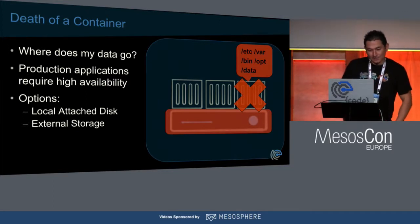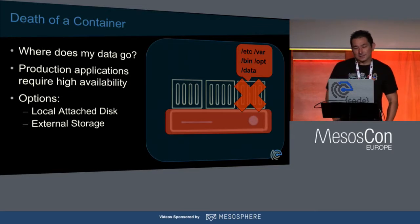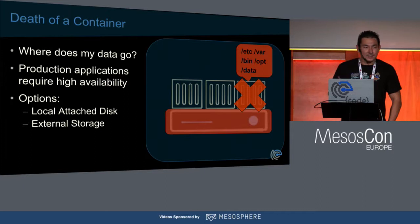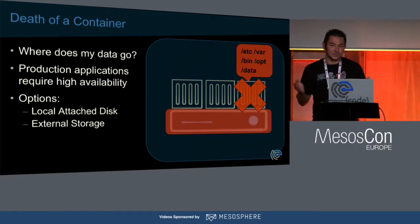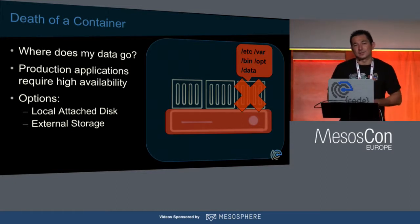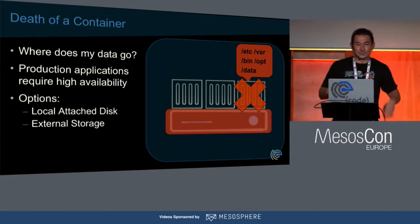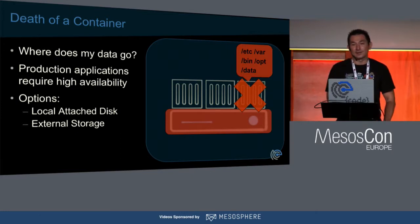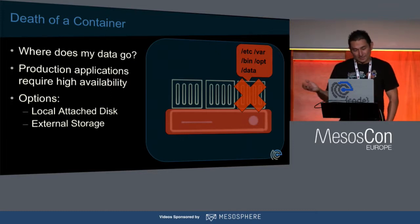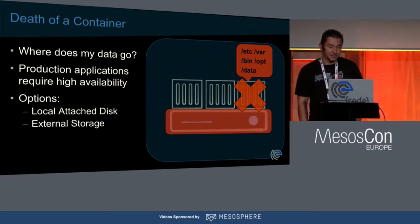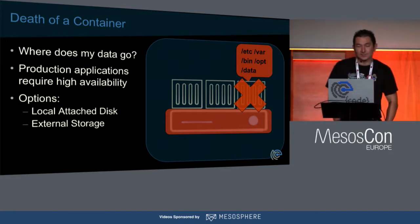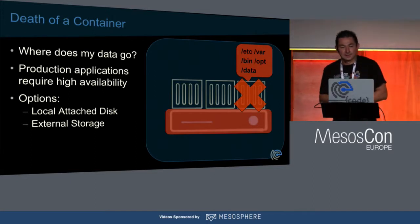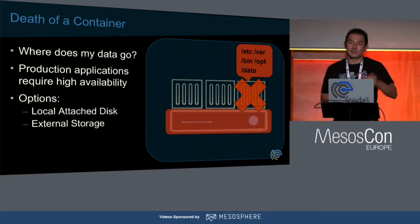We have to look at the fundamental problem with containers: they're ephemeral in nature. A container comes up, data gets collected, and when the container comes down, the container and its data are gone. But in a production environment, if you're running a stateful application, you need that state to be available at all times. When a node fails, you want the data to follow the container when it gets moved within your cluster. That leads to two options for data persistence: local attached disk, and external storage — storage that lives outside the compute and can be attached to the host.